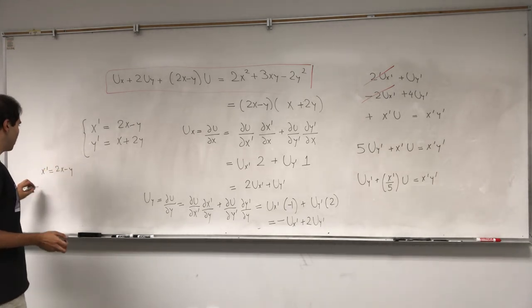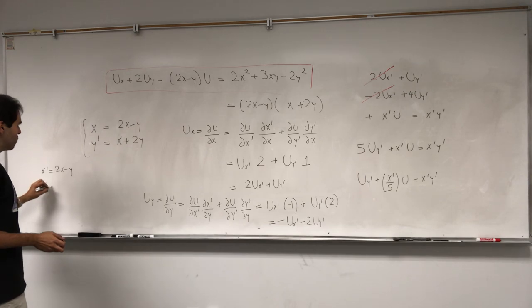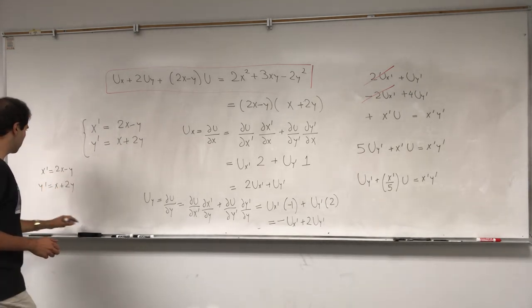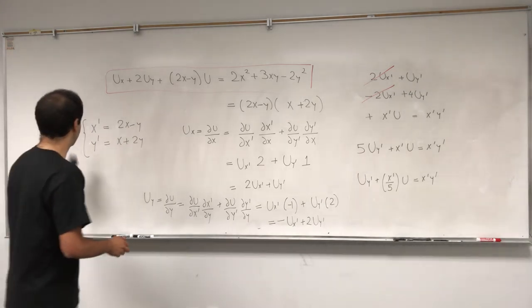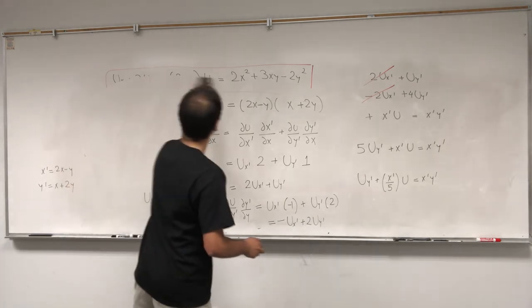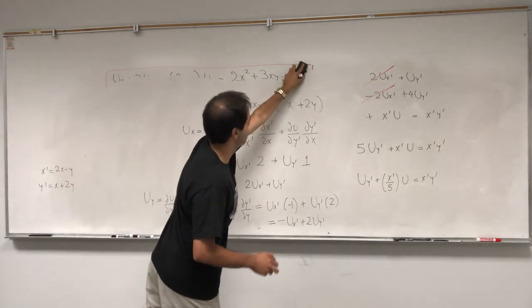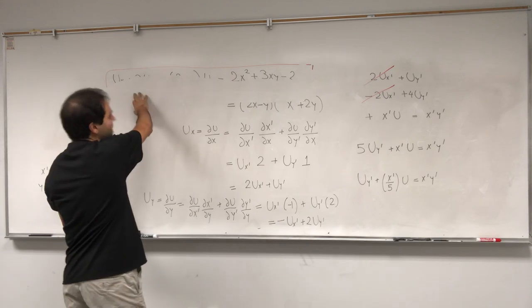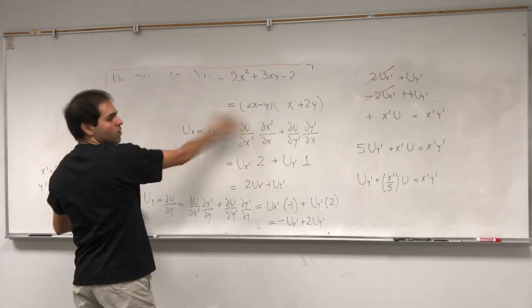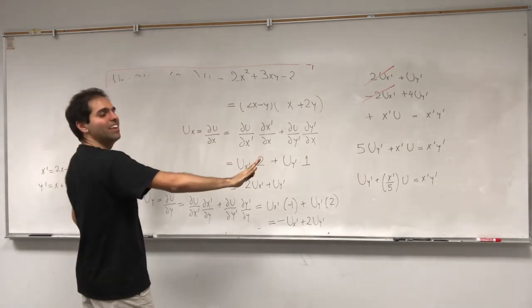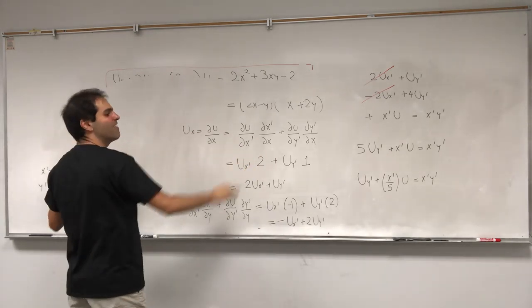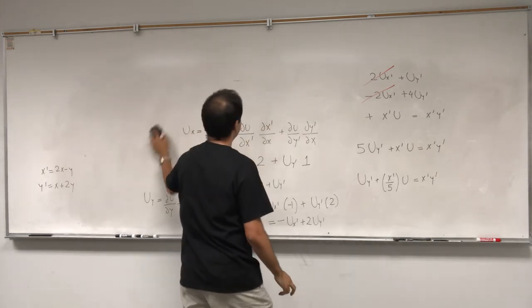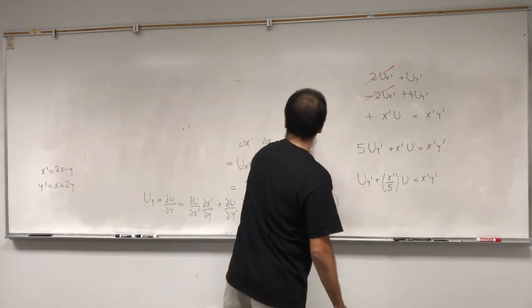Already much better — we had this complicated PDE and we reduced it to a sort of ODE. Let me write down those variables before erasing the board: x prime equals 2x minus y, and y prime equals x plus 2y. We've already rewritten the PDE so we can proceed.